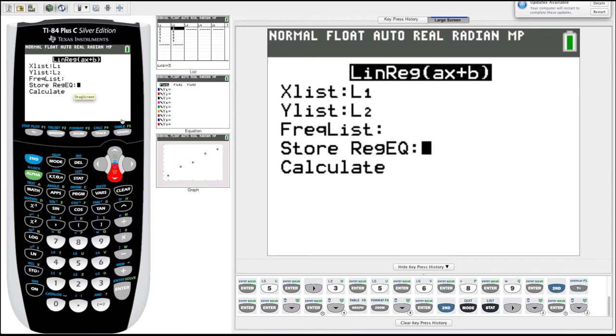Yeah, we do want to store it because we want to plot it, we want it to graph, we want to graph the line it produces. So what we'll do is we'll enter it into y1. You see this middle screen has an image of my y equals screen. Let's enter into y1.